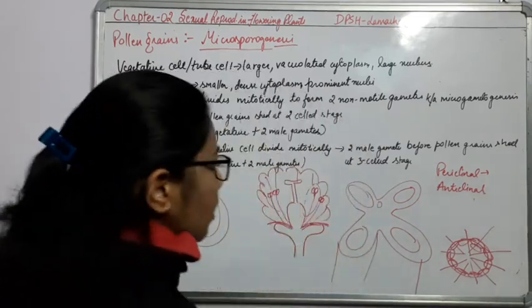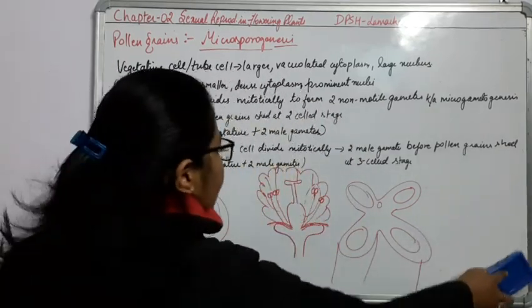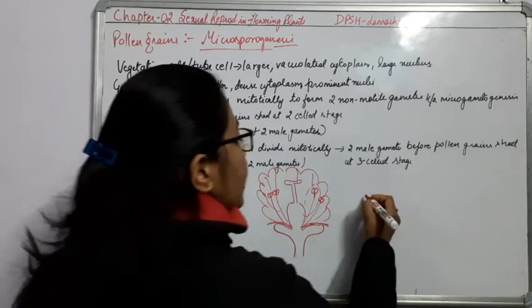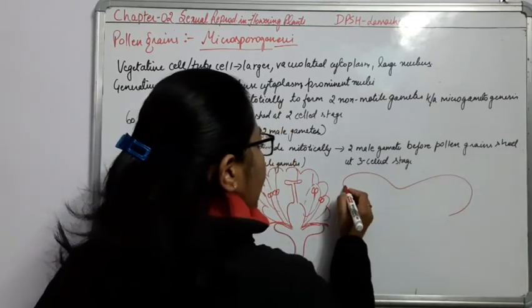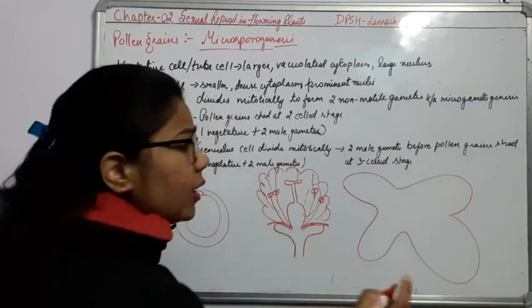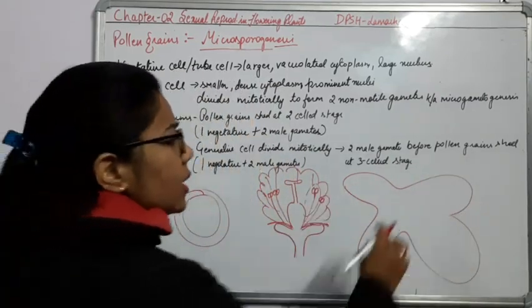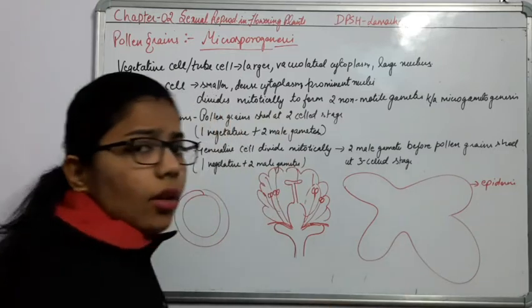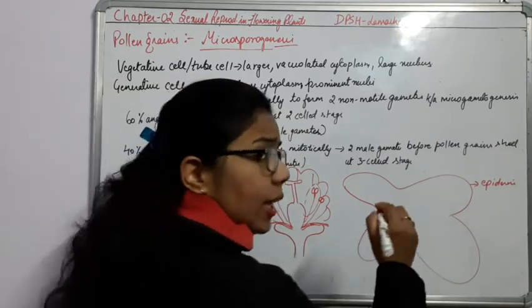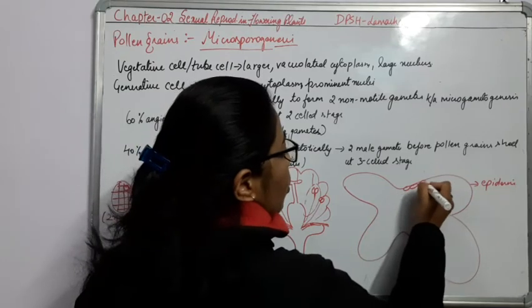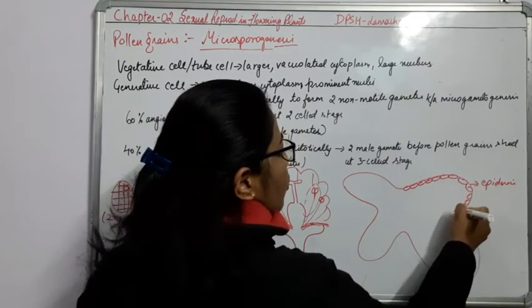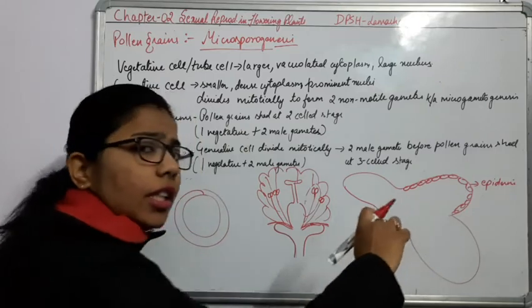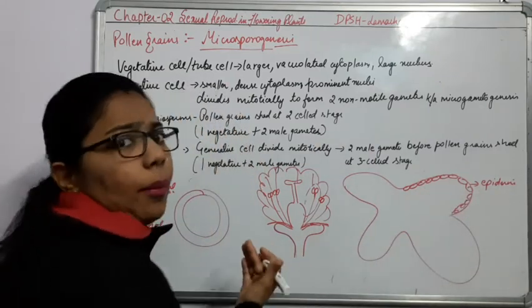If I show you the exact structure of this anther — as it is a bilobed structure, it is having different layers. The outer layer has cells known as the epidermis. Inner to it there are some more layers. Due to this periclinal division, it will differentiate into the epidermis as well as layers below the epidermis.